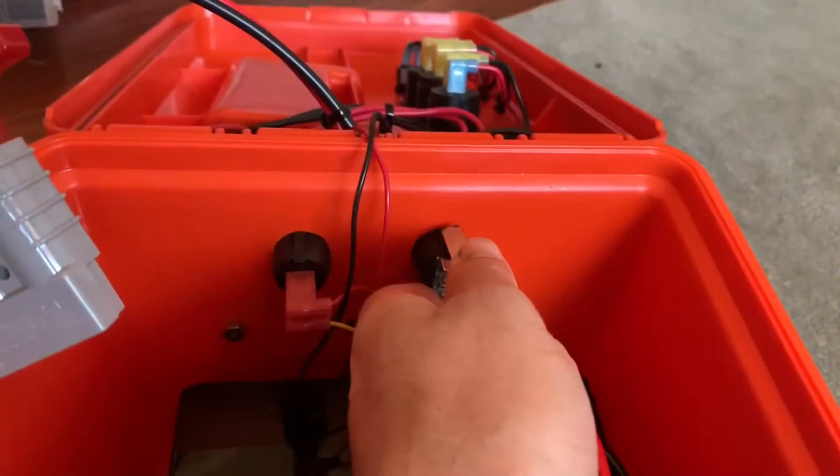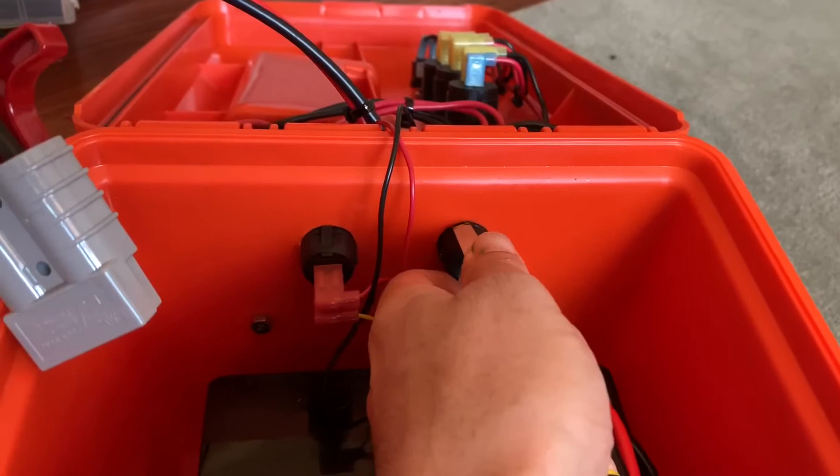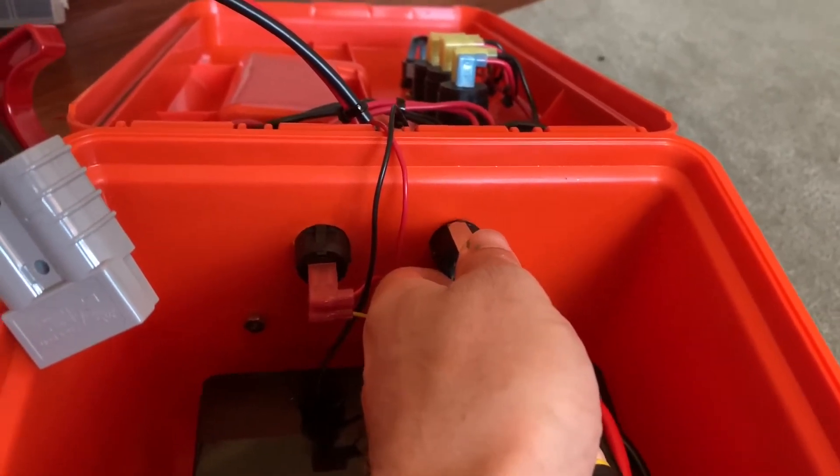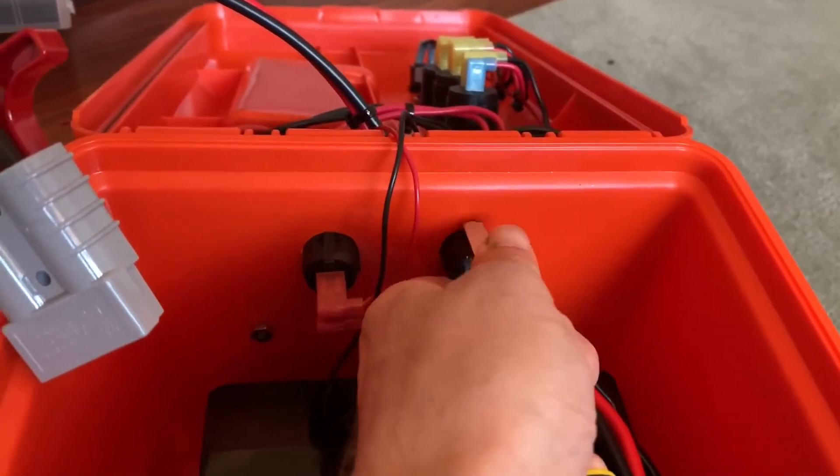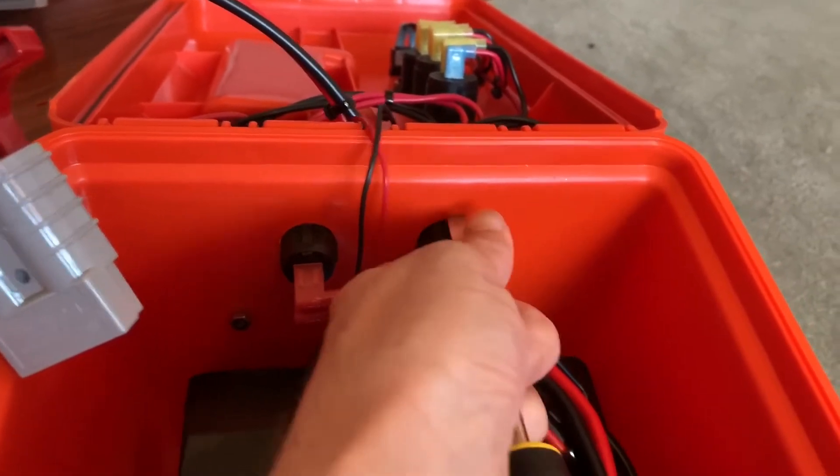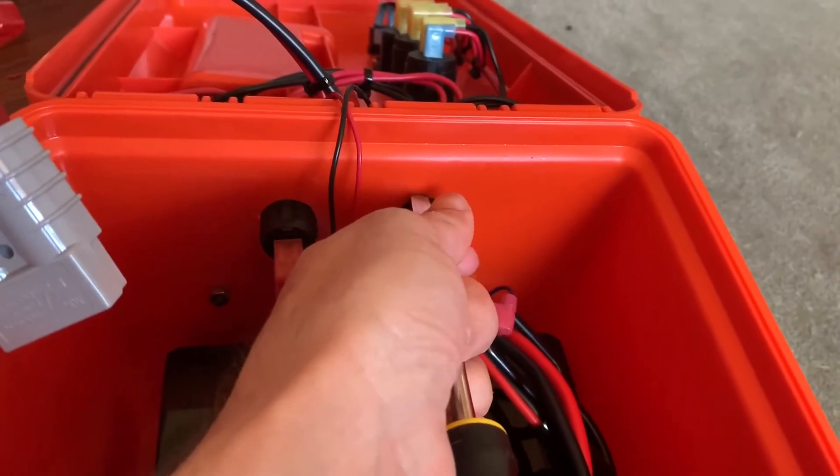Now we're going to remove the on-off switch that comes with the box and replace it with an on-off-on switch, so we can power two different modes of the light. So you just take a screwdriver, you kind of push it down on the top tab, and push up with your finger from the bottom, and just sort of wiggle until the switch comes out.